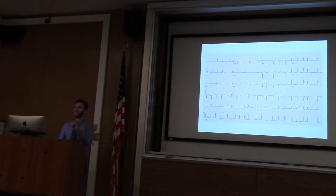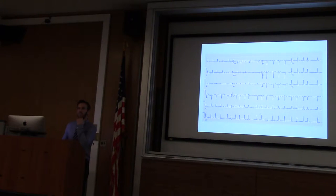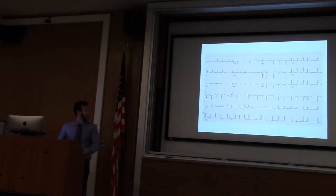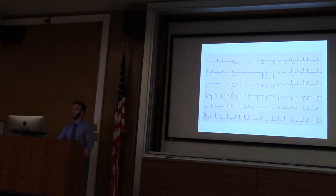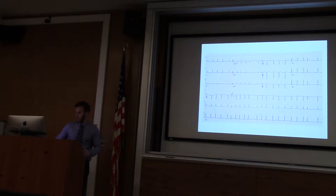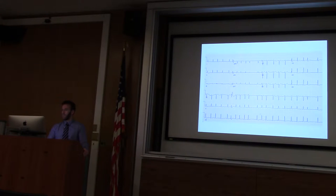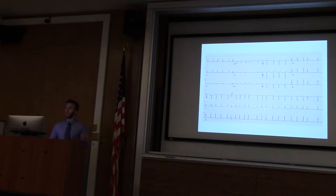Looking at the EKG — it's still rapid, kind of hard to tell. Sometimes it's over 300, sometimes over 200 — so fast. We have tachycardia, what else? Irregularly irregular rhythm, normal axis, can't really see intervals. So we have an irregular narrow complex tachycardia.